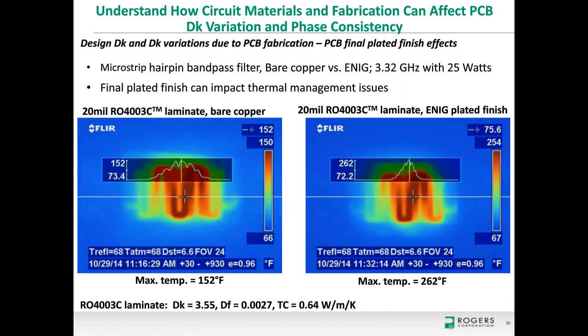Final plated finishes also affect thermal management: more insertion loss means more heat generated. Two identical filters on 20 mil RO4003C — one with bare copper, one with ENIG — show that after reaching thermal equilibrium, bare copper circuits peaked at 152°C while ENIG circuits reached 262°C, a significant difference driven by the additional losses from the nickel finish.